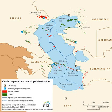However, since May 1992, following the First Nagorno-Karabakh War, Karki has been controlled by Armenia, which administers the 19 square kilometer territory as part of its Ararat Province.